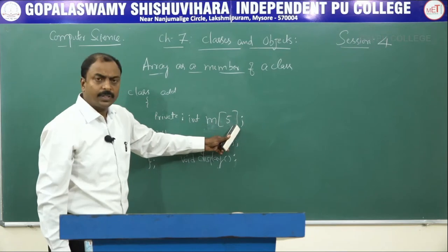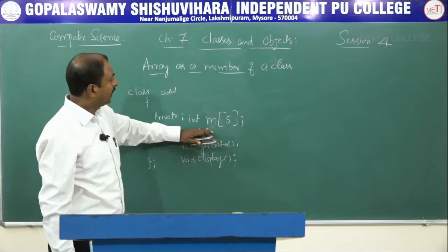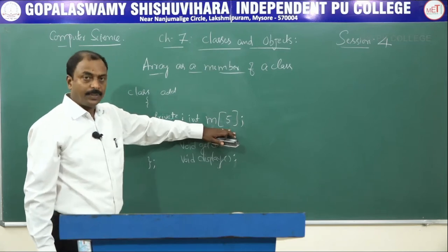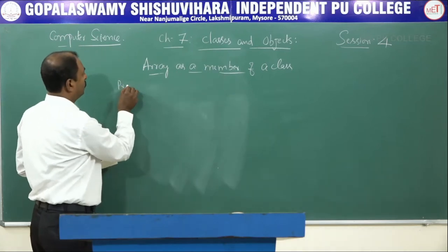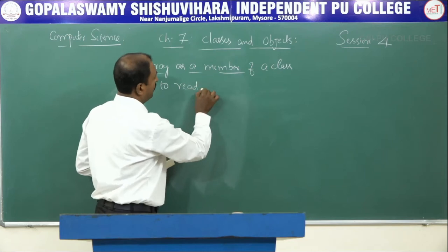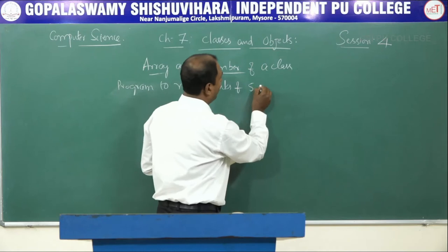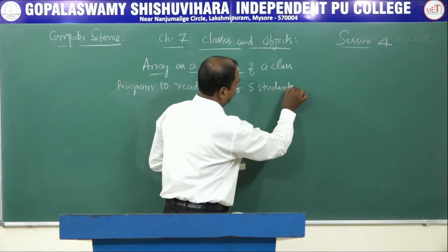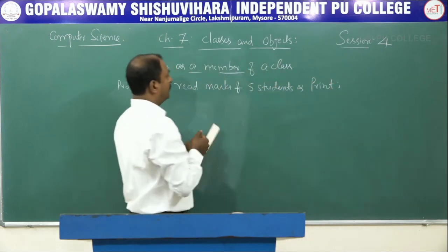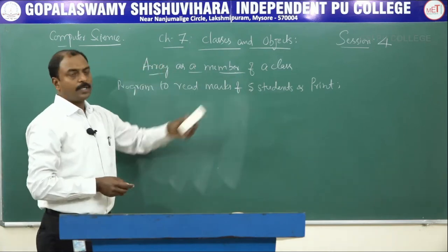So, by writing int m[5], we have declared an array as a member of a class. This is the meaning of the heading 'Array as a member of a class'. Now, let us write a program based on this: a program to read marks of 5 students and print them.